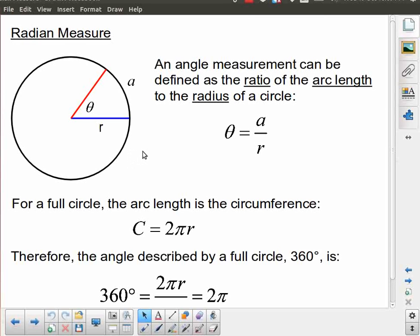Now you are almost certainly familiar with the idea of degrees as an angle measurement. So a full circle represents 360 degrees. But radian measure is actually a much more natural way to measure angles. The only problem with radian measure is that it introduces some awkward numbers. So it's a natural way of doing this but unfortunately the numbers aren't always very nice to deal with.